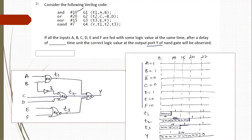With inputs 1-1-1 to the NAND gate at 20 time units, it takes another 7 time units of delay, generating output 0. The total time for the correct logic value to appear at output Y is 27 time units — that is the answer.